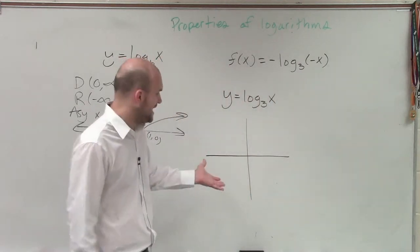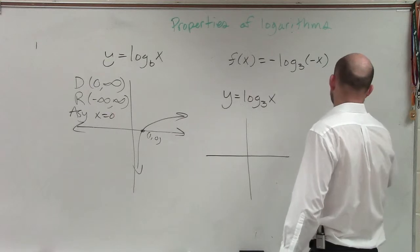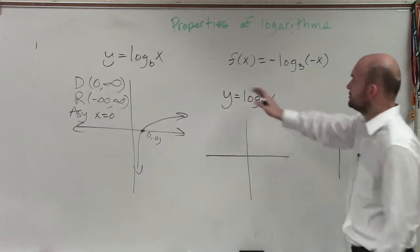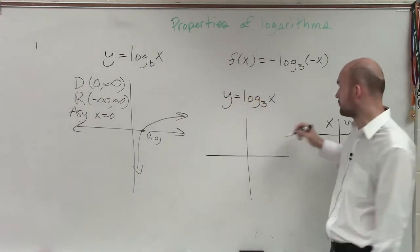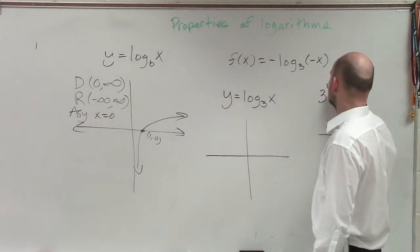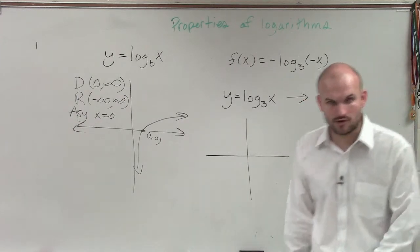What you can do when you're doing that is create a table of values. So what I like to do is change it from a function to an equation so I can rewrite it in exponential form. It makes a little more sense. 3 to the y equals x. So I convert it to exponential form.